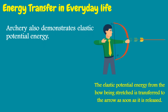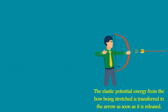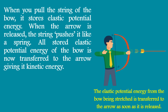Archery also demonstrates elastic potential energy. Recall that elastic potential energy is the energy stored due to the movement of elastic objects, like springs. When you pull the string of the bow, it stores elastic potential energy. When the arrow is released, the string pushes it like a spring, and all stored elastic potential energy of the bow is transferred to the arrow, giving it kinetic energy.